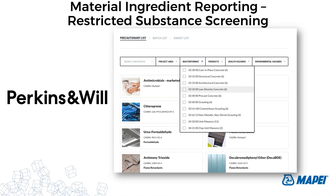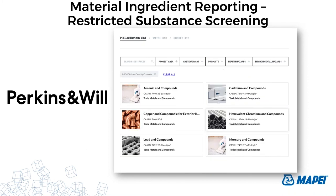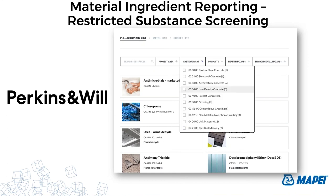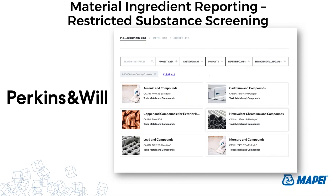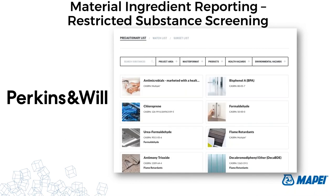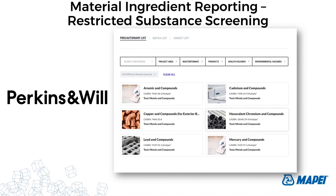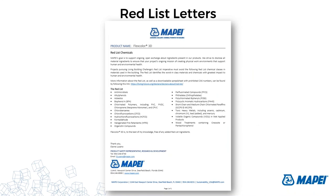There's also a targeted list called Perkins and Will's Precautionary List. They've compiled the most problematic substances encountered in the built environment and allow design professionals to search for key substances and chemicals of concern by filtering by project type, product type, and health and environment impacts. There isn't necessarily a formal document for sharing Red List information beyond a Declare label or Living Product Challenge label. If a manufacturer doesn't have one of those forms of reporting, they can provide a letter stating whether or not their product includes Red List chemicals — this is an example of a Red List letter that can be provided to project teams.